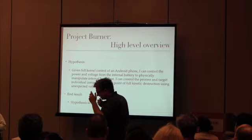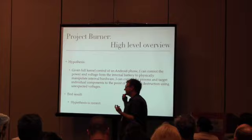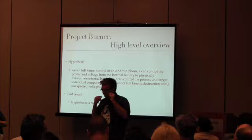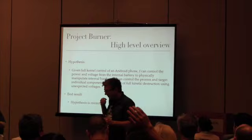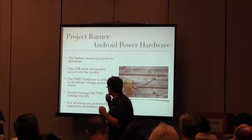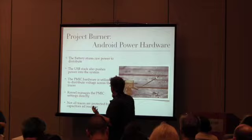My hypothesis — because I'm a scientist — was that getting full control of the kernel in an Android phone, I should be able to control voltage, I should be able to control all the power. When I can control that power, what can I do? My guess at the time was that I can target and overvolt or undervolt actual physical parts on the PCB of the phone and fry them — to where they're just dead, never functional again. My hypothesis was surprisingly correct. It was actually a little letdown that it was — I was hoping it would be harder. The battery stores raw power, USB also pushes power to the phone to charge the battery.